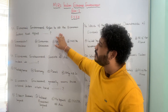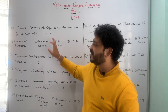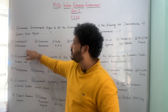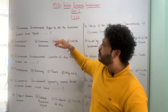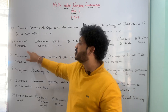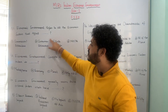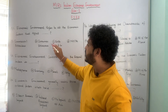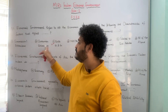The first question is: economic environment refers to all economic factors that affect — A: commercial behavior, B: consumer behavior, C: both commercial as well as consumer behavior, and D: none of these. The correct answer is option C — both commercial as well as consumer behavior.